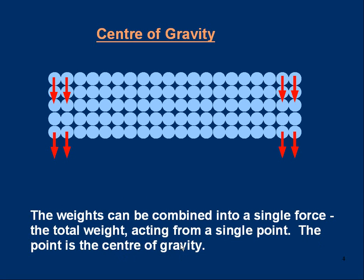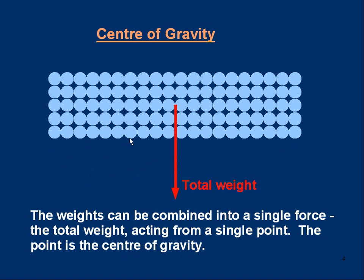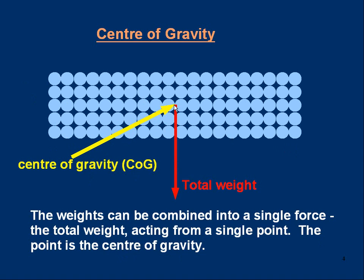Look at the object. Let's get rid of the separate little weights and replace them. This is the total weight — its magnitude is the weight of all the little atoms added together. The position where it starts from is the average position of where all the individual small weights started from. This point is right in the middle because I've drawn a nice symmetrical object, and that point is called the center of gravity. You can think of a single force acting from that point instead of all the little forces on the individual atoms.